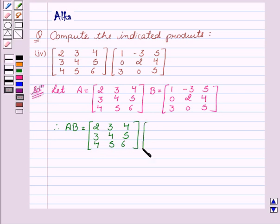Multiply by matrix B which is 1, minus 3, 5, 0, 2, 4, 3, 0, 5.